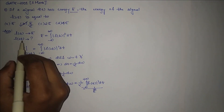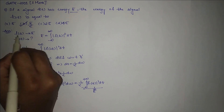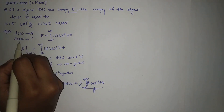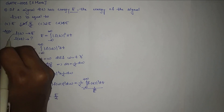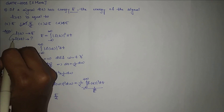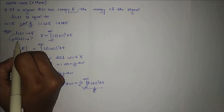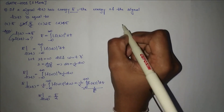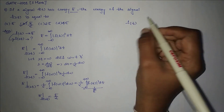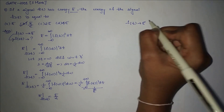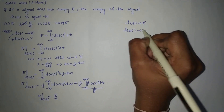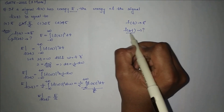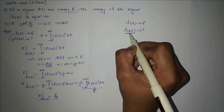Observing the question: the energy of signal f(t) is e and we are asked to find the energy of signal f(2t), meaning the signal is time scaled. Let us find a general formula to obtain the energy of time scaled signals. If f(t) has energy e, we find the energy of signal f(at), where the signal is time scaled by scaling factor a.